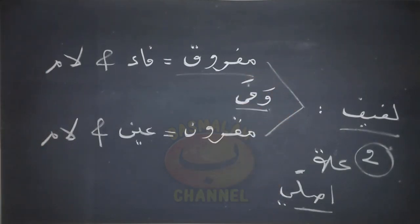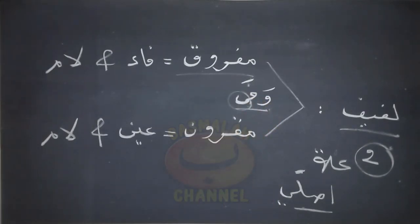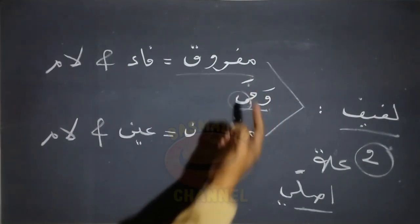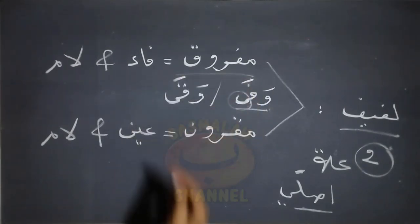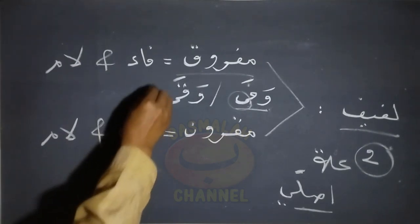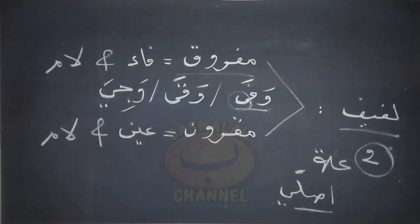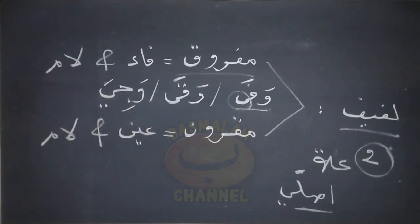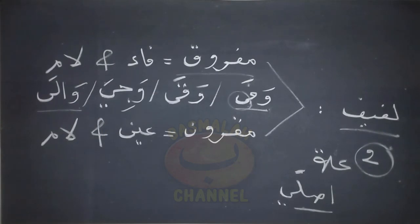Contoh untuk bina' lafif mafruk seperti lafad wa'fa. Di sini terdapat dua huruf ilat dalam satu kalimat, di mana posisinya terdapat pada fa'fi'il dengan lam fi'il, posisinya di sini tidak bertemu langsung, yaitu waw dengan alif. Contoh yang lain seperti lafad wakho, wajiyah, atau wala yang mengikuti wazan fa'ala. Ini juga termasuk bina' lafif mafruk di mana huruf ilatnya terdapat pada fa'fi'il dan juga lam fi'il.